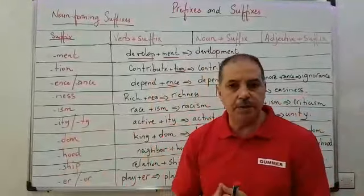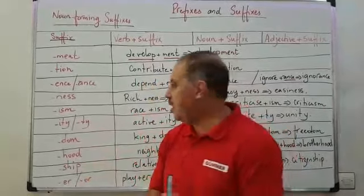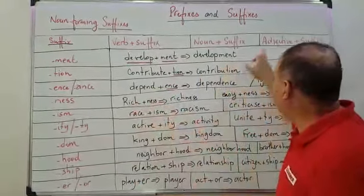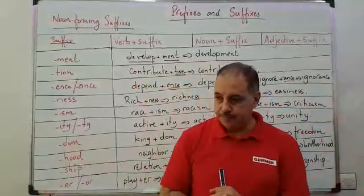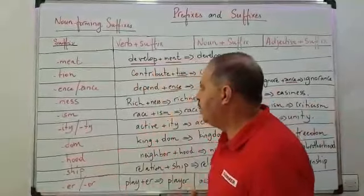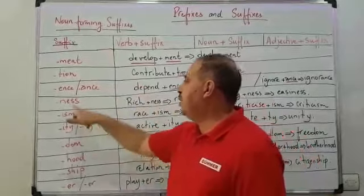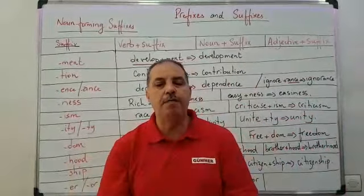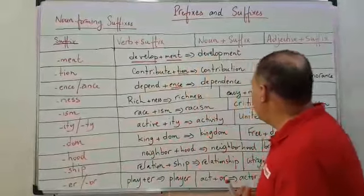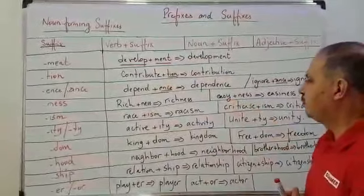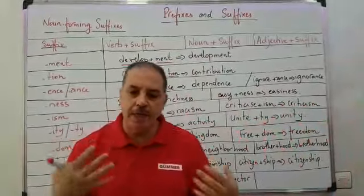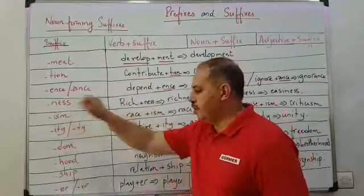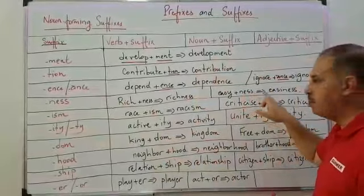Another suffix needed to form nouns is '-ness'. For example, 'rich' can be an adjective — we say 'this person is rich'. But to form a noun, we add '-ness', so 'rich' plus '-ness' becomes 'richness'. Another adjective: 'easy' — for example, 'this exam is easy'. We need a noun from this adjective, so we add '-ness' and 'easy' plus '-ness' becomes 'easiness'.